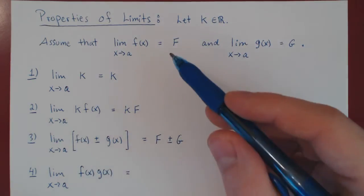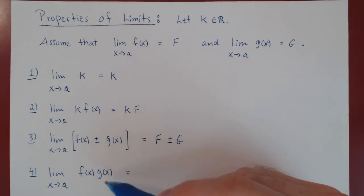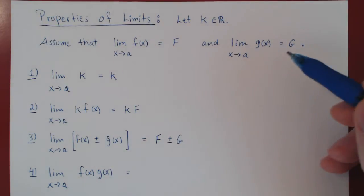So if f is getting closer and closer to F, and g of x is getting closer and closer to G, the product will be getting closer and closer to F times G.